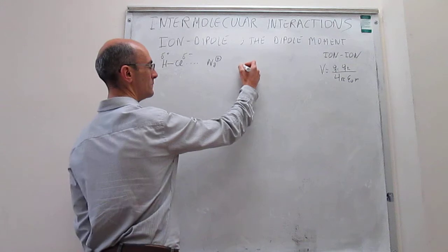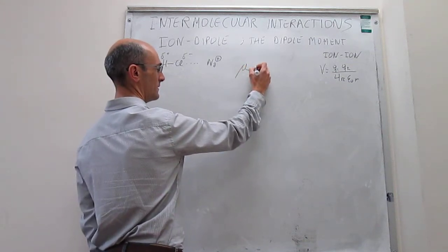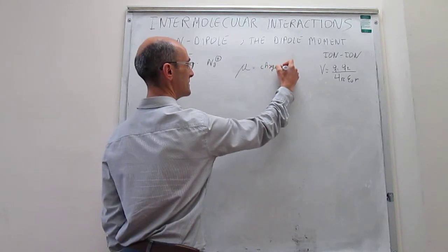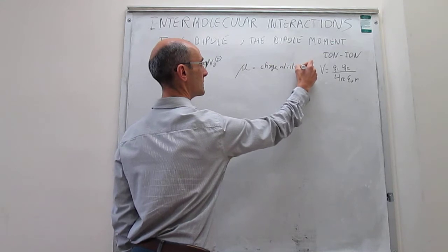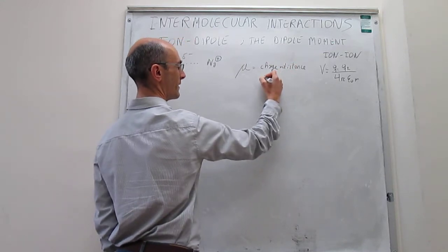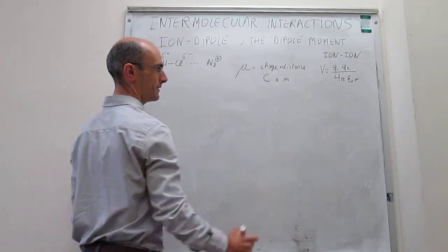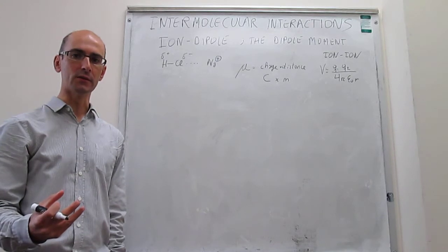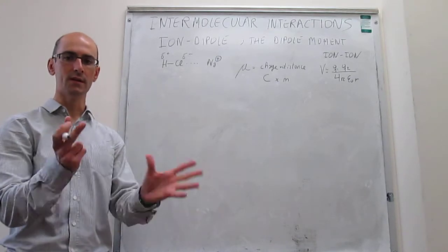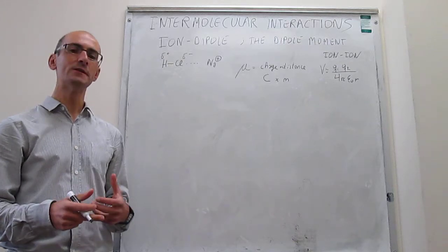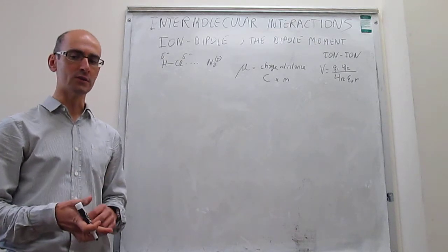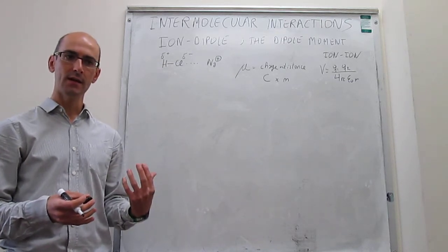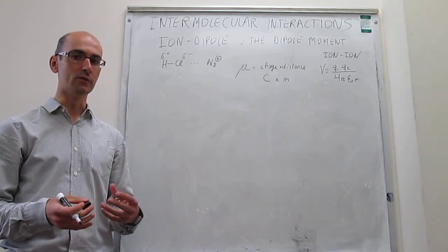The general definition of the dipole moment, captured by the letter mu (μ), is simply the product of charge times distance. This means the dipole moment has units of Coulombs times meters. The dipole moment is a vector, so it points in a given direction in space. For complicated molecules, the best way to handle this is to calculate the dipole moment in each direction of space and then use those components to calculate the overall vector.